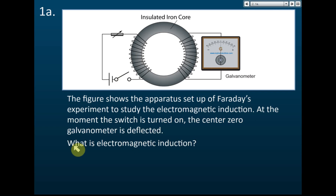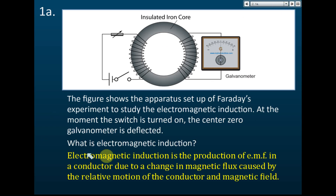Question 1A asks: what is electromagnetic induction? This question is about the definition of electromagnetic induction. Electromagnetic induction is the production of EMF or electric current in a conductor. But if you just say 'production of electric current,' you won't get any marks. You must explain how the EMF is produced.